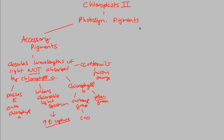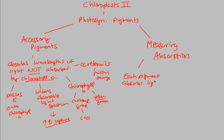In addition to the idea of accessory pigments, your notes also mention measuring absorption — applying the knowledge we've learned. Each pigment absorbs light energy at some wavelengths better than others. Carotenoids absorb yellow and orange — they have yellow and orange capabilities more than anybody else. Chlorophyll B has yellow and green more than anybody else. Chlorophyll A is great at bright green. Everybody has a specific job they're good at in terms of accessory pigments.